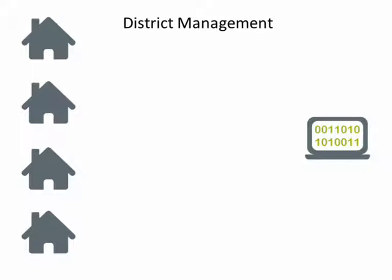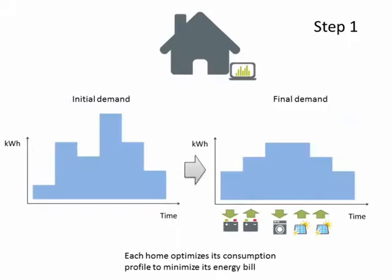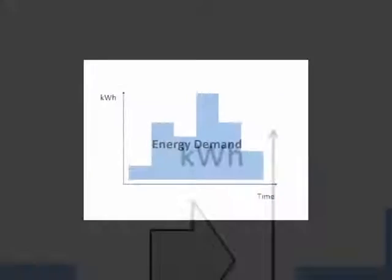District management in Mastering proceeds in two iterated steps. In the first step, homes minimize their energy bill by scheduling their flexibilities, which results in an optimized consumption profile. Let us see in more details how the homes can do so.